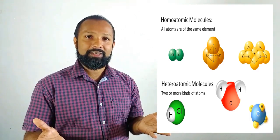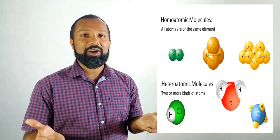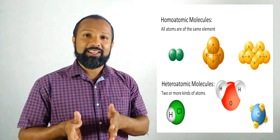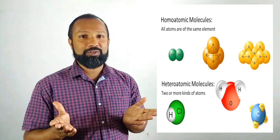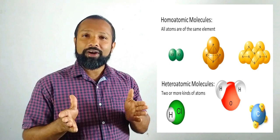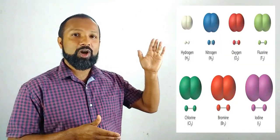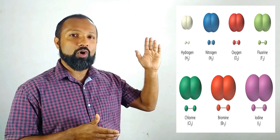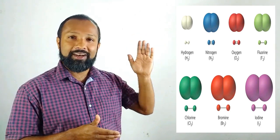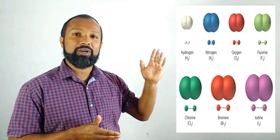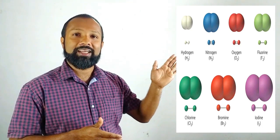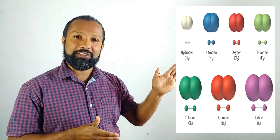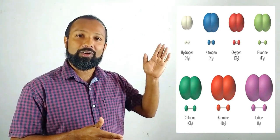Molecules made by combining two or more same types of atoms are called homoatomic molecules. Examples include: the oxygen molecule O₂, made up of two oxygen atoms; the hydrogen molecule H₂, made up of two hydrogen atoms; the nitrogen molecule N₂, made up of two nitrogen atoms; and the chlorine molecule Cl₂ — these are all good examples of homoatomic molecules.